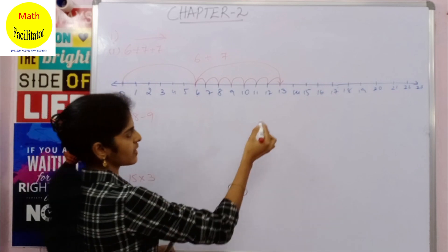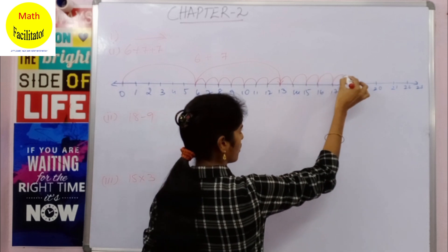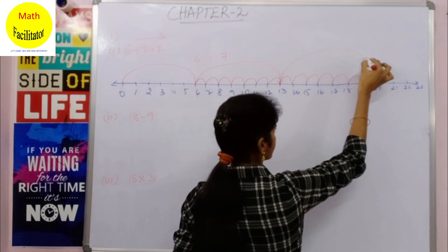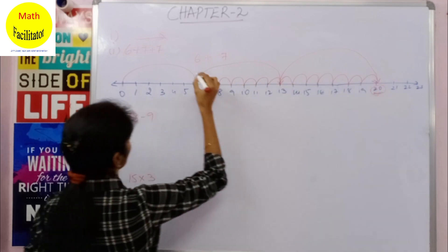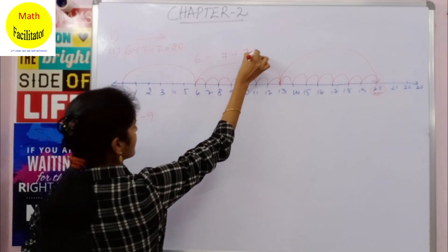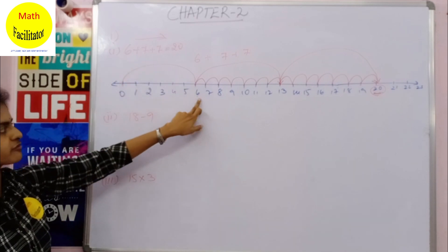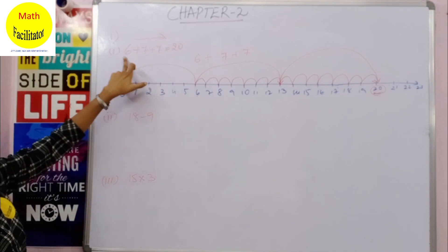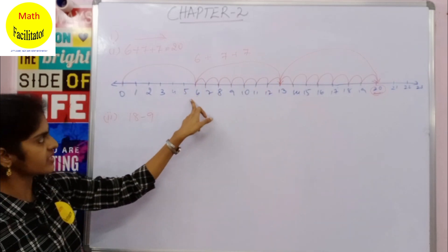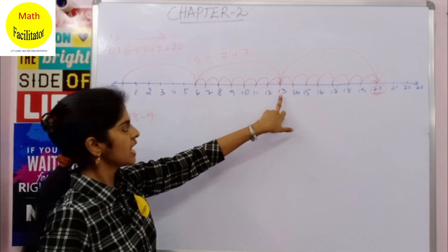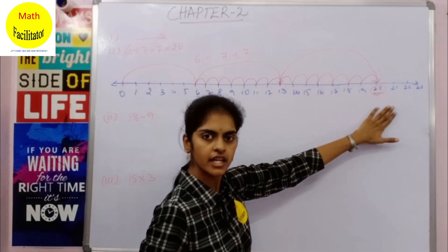Again you have to add one more seven, so from 13 you have to move seven steps forward: one, two, three, four, five, six, and this is the seventh step — so this is 20. The final answer: you have reached the point 20, so 6 plus 7 plus 7 is 20. We started from zero, jumped to 6, then moved seven steps forward to reach 13, then again moved seven steps to reach 20.